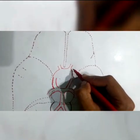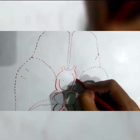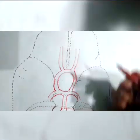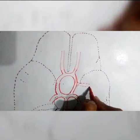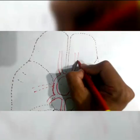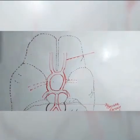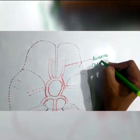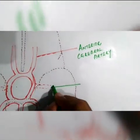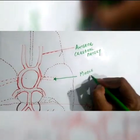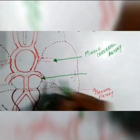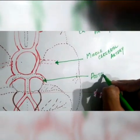The Circle of Willis gives off a few branches: the anterior cerebral artery, the middle cerebral artery, and the posterior cerebral artery.